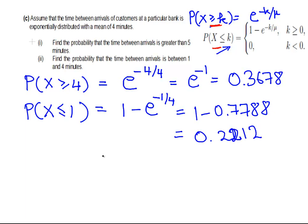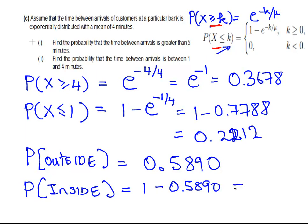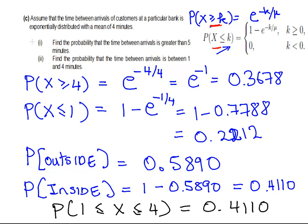The probability of being outside the interval is the sum of those two: 0.3678 plus 0.2112, which equals 0.5890. So the probability of being inside the interval equals 1 minus 0.5890, which is 0.4110. Therefore, the probability of X being between 1 and 4 equals 0.4110. That ends this presentation on the exponential distribution.